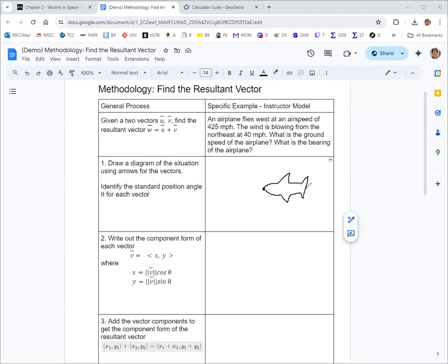We want to draw the vectors for the problem. So we have a vector for the airplane itself, that's going west and that's 425 miles per hour. Then we have the wind blowing from the northeast, which means it's blowing to the southwest or down and to the left.